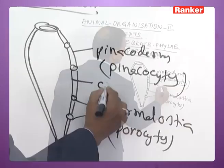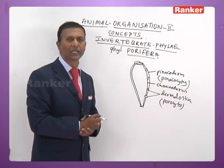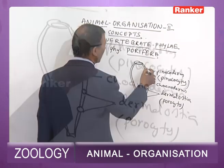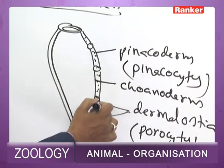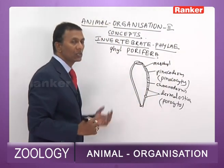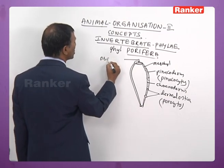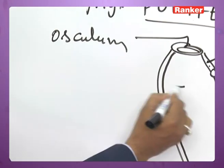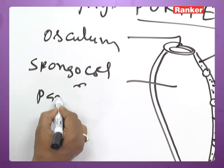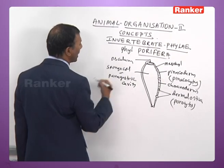The inner layer of the body wall is called choanoderm, which is made up of choanocytes. Between pinacoderm and choanoderm, there is a gelatinous substance called mesohyle, deposited with various cells. The terminal aperture of the body is called osculum, and the body cavity is called spongocele or paragastric cavity.